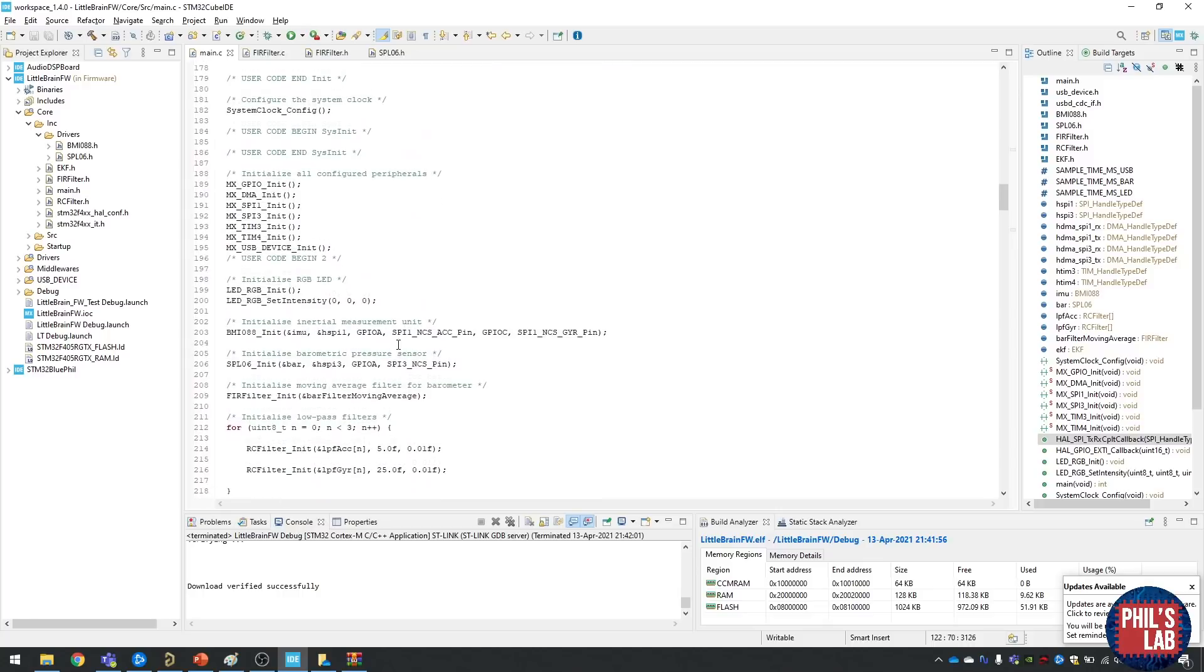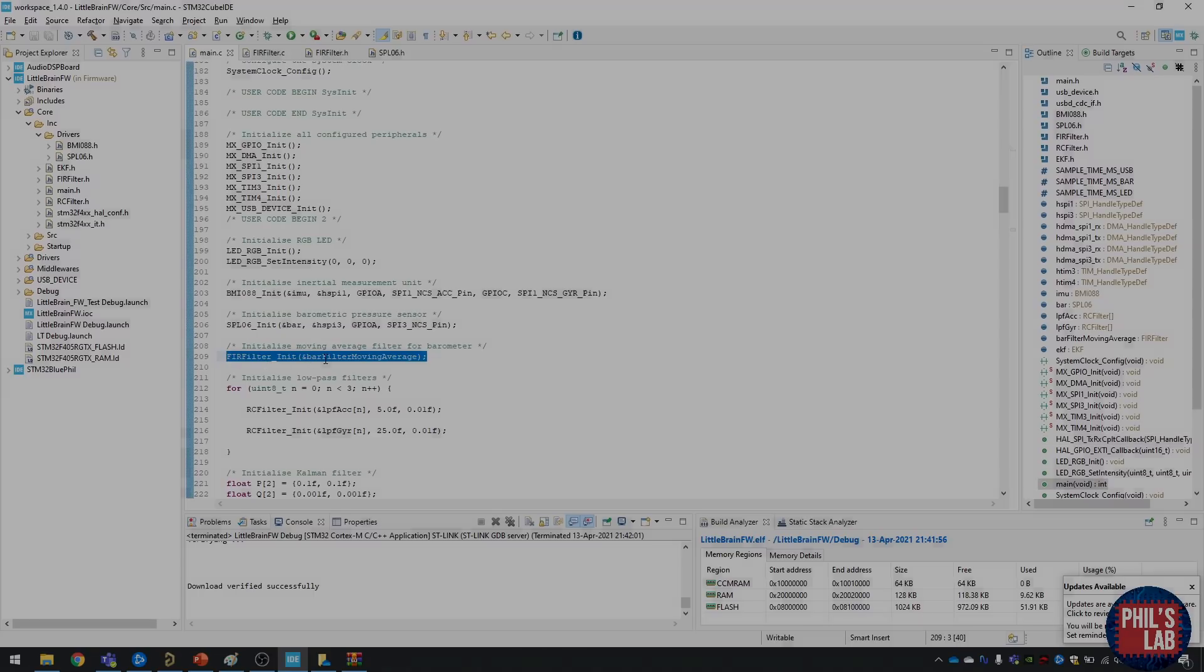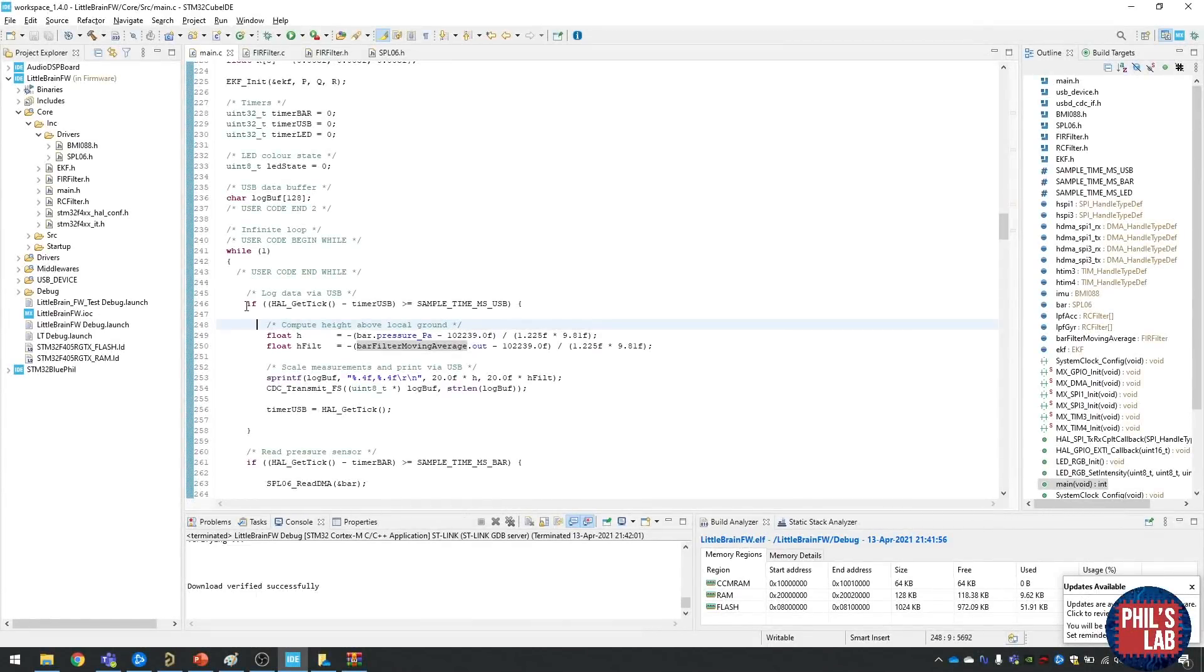In the main function which is called at startup when the MCU boots, of course we have to initialize the filter. The way I do that is call FIR filter init struct and that'll set up all our buffers and arrays.